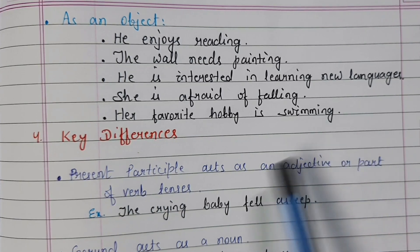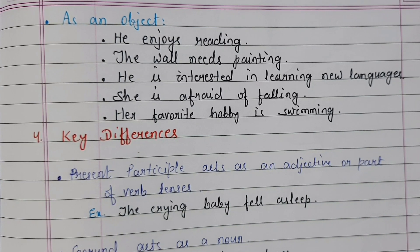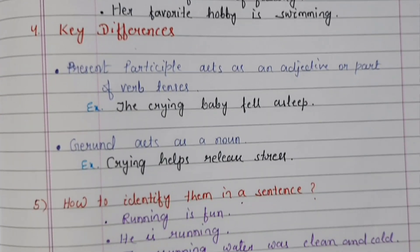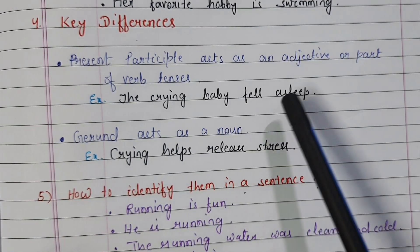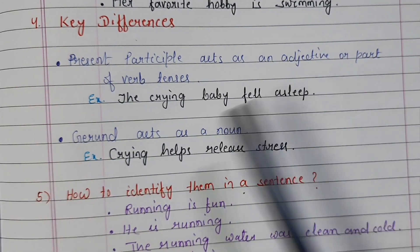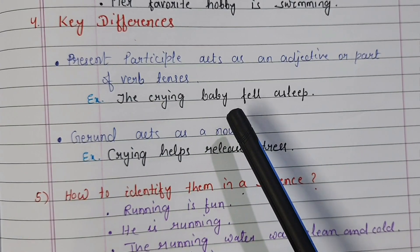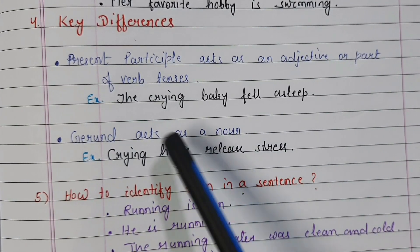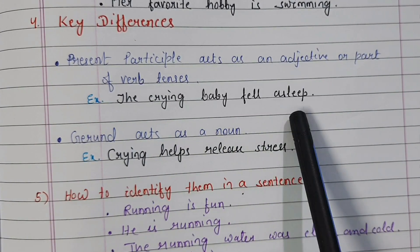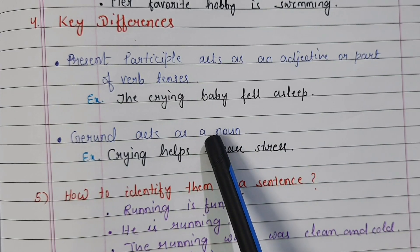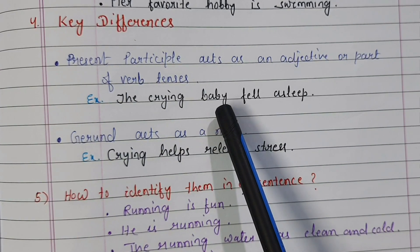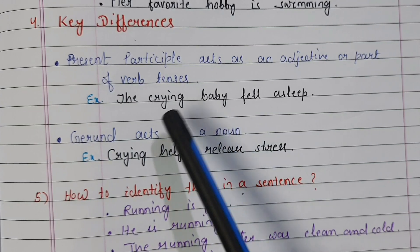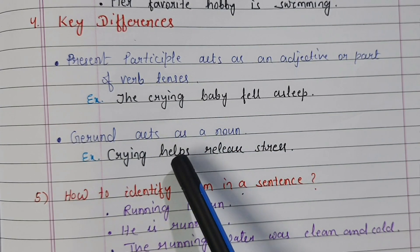What is the key difference between present participle and gerund? Present participle acts as an adjective or part of verb tenses. For example: 'The crying baby fell asleep.' Crying baby — baby is the noun, crying is used to describe baby. So crying here acts as an adjective; it is present participle.